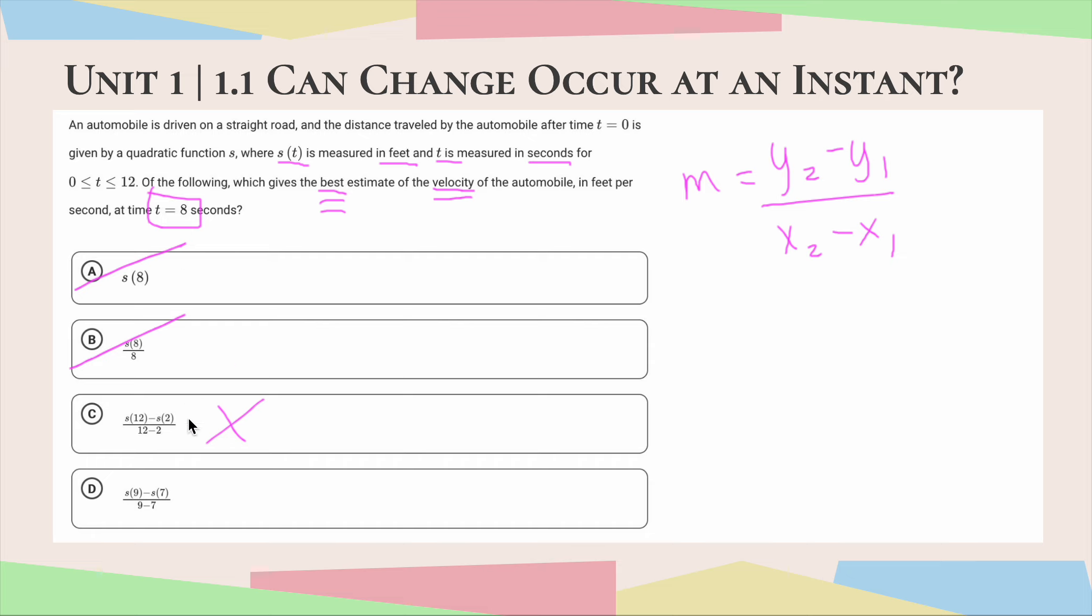So this one, not only are those endpoints closer to 8, but they're also each equally spaced from 8, right? They each have a distance of 1 unit away from 8. So answer choice D would give you the best estimate for the velocity.